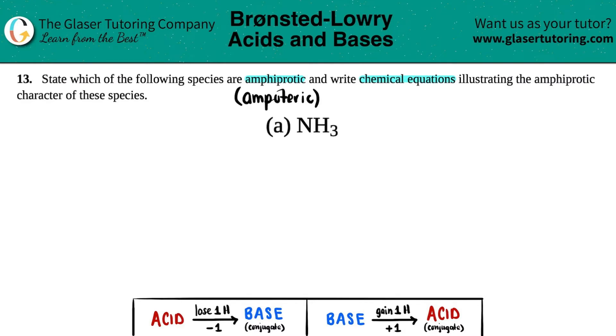Tomato, tomato. Oh, I just realized I spelled this wrong - 'ampoteric' - we need to add that H in there. So if an ion or a molecule is amphoteric or amphiprotic, that just means it has both acidic and basic properties, so it can act as both an acid and a base depending on what situation it's in.